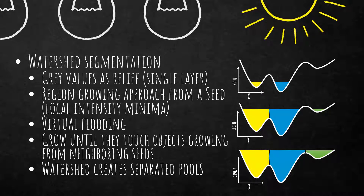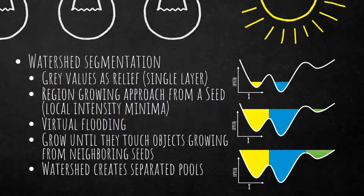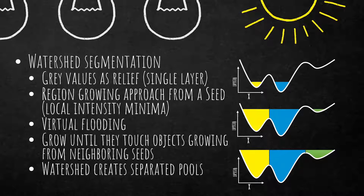What the watershed segmentation does is create image objects based on a single layer. It's based on gray values and it's a bottom-up approach. It starts from single seeds and grows until it touches other objects, then stops growing in those directions. These seeds are local intensity minima. You can also invert your layer so that maxima become the new minima. It simply does a virtual flooding of your grayscale image and the objects grow until they touch other objects.